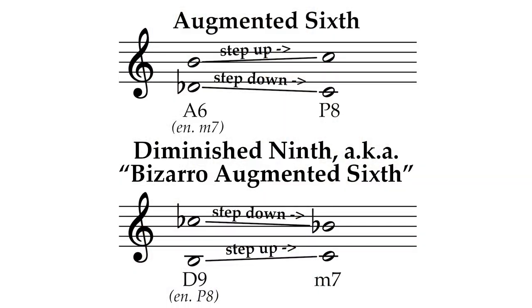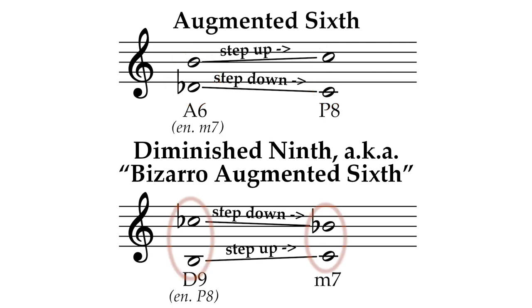I mention the augmented sixth because the voice leading is a little like a bizarro augmented sixth. If we look at the anatomy of an augmented sixth chord, it gets its name from an expanded sixth that resolves out to an octave. This is the inverse — it's resolving into a seventh from a compressed ninth. In both cases, we have to spell the first interval in an unusual enharmonic way to visually preserve the contrary motion that we hear aurally. Schumann could have just inverted this and taken an octave into an augmented sixth, but when you're dealing with unusual spellings, the goal of the progression should be as normal and easy to read as possible. Hence: diminished ninth.